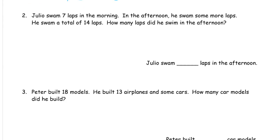Julio swam 7 laps in the morning. In the afternoon, he swam some more laps. He swam a total of 14 laps. How many laps did he swim in the afternoon? We know how many he swam in the morning, but we don't know the afternoon ones. But we do know his total for the day. So we can start with the 7 — start with what we know.